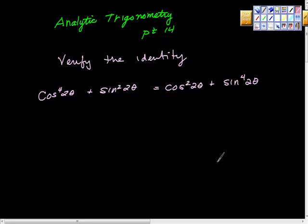Analytic trigonometry part 14. Verify the identity. Our goal here is to transform one side into the other side. It gets a little hairy here, doesn't it?